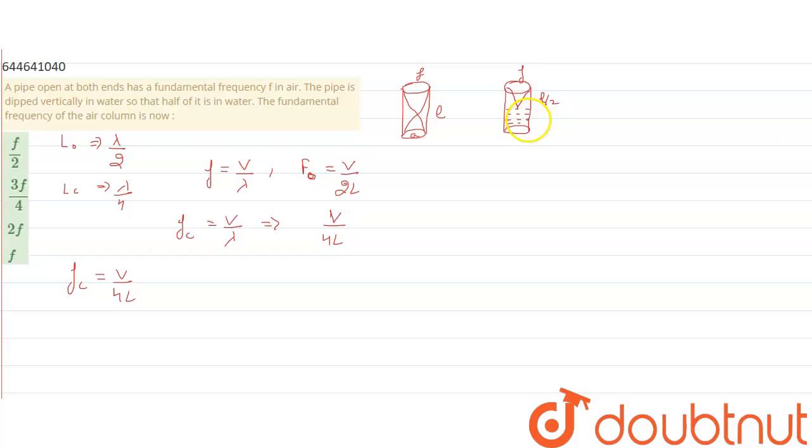Now after putting the value of L, which is L by 2, we will be having V upon 4 times L by 2. So it will cut itself and give us the new value of closed frequency of closed pipe, which will be equal to V upon 2L.